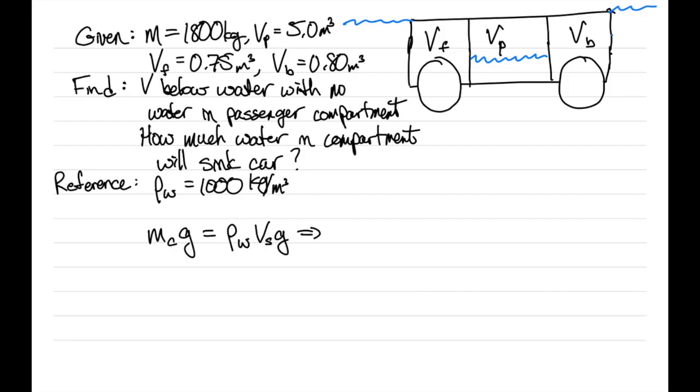So we get our volume submerged is the mass of the car divided by the density of water. We're given that the mass of the car is 1800 kilograms, and the density of water is 1000 kilogram per cubic meter. So we simply get 1.8 cubic meters of the car is submerged.